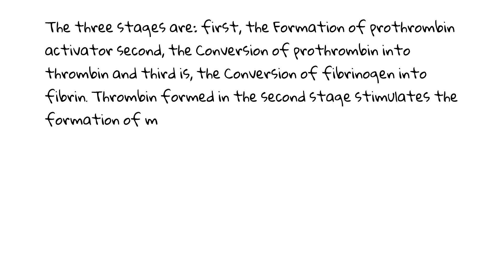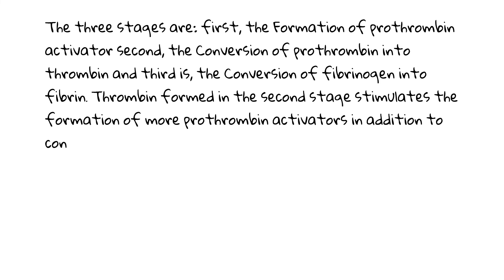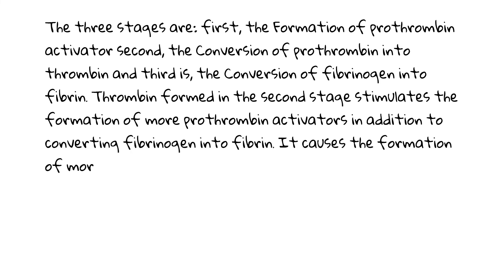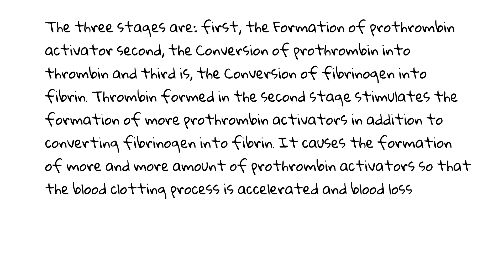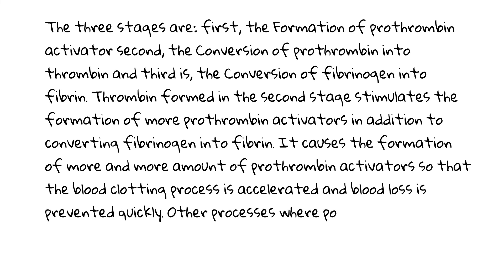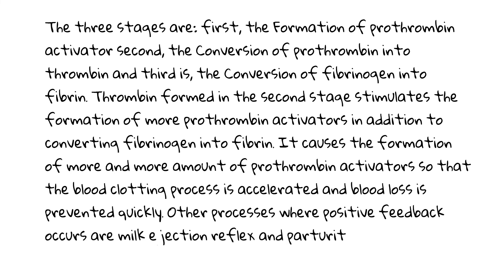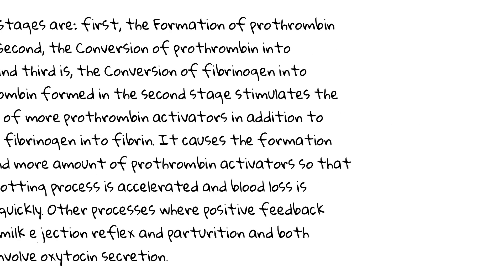Thrombin formed in the second stage stimulates the formation of more prothrombin activators, in addition to converting fibrinogen into fibrin. This causes the formation of more and more prothrombin activators so that the blood clotting process is accelerated and blood loss is prevented quickly. Other processes where positive feedback occurs are the milk ejection reflex and parturition, and both processes involve oxytocin secretion.